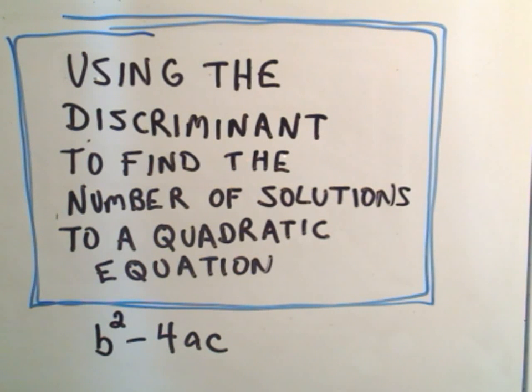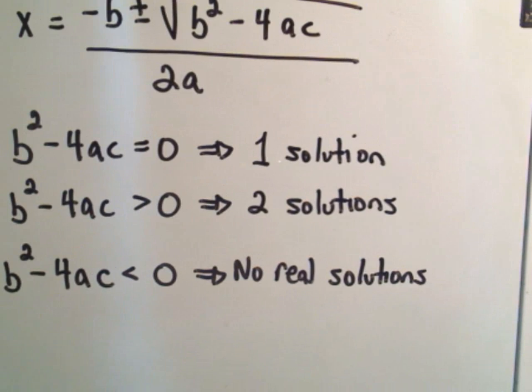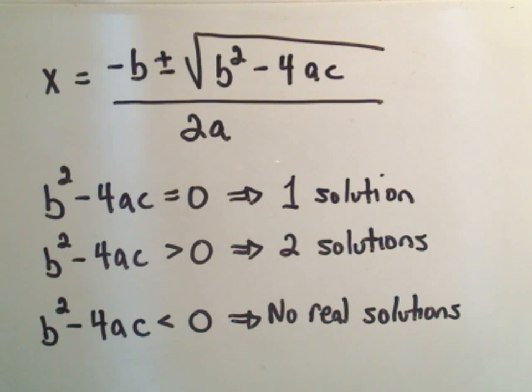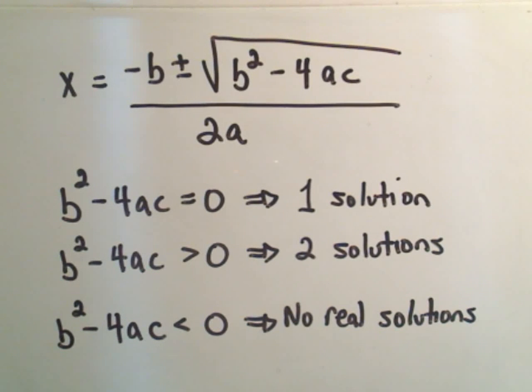And the discriminant is the value b squared minus 4ac. And if you know the quadratic formula, this might look familiar. So, the quadratic formula says if you have a quadratic ax squared plus bx plus c equal to zero, you can find solutions to that quadratic equation using this formula.